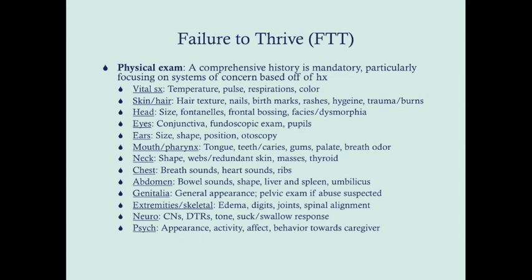The conjunctiva can help determine if there might be anemia. Fundoscopic exam and looking at the pupils can help you see if there is a congenital infection. Look at the ears — size, shape, and position are typical features of dysmorphia. Looking at the tympanic membrane is important, as the ear is commonly affected in some congenital immunodeficiencies. Looking at the mouth and pharynx, especially breath odor, can point towards a possible metabolic disorder. Look at the neck — webs or redundant skin can point towards Turner syndrome or Noonan syndrome, which can also affect boys. Palpate the thyroid, which can point towards hypothyroidism or hyperthyroidism.